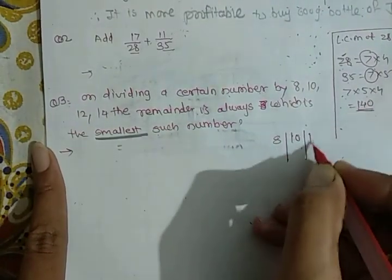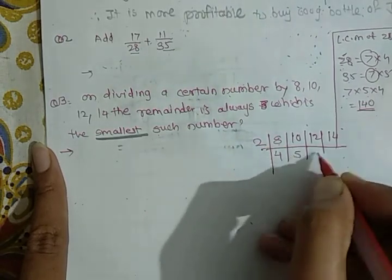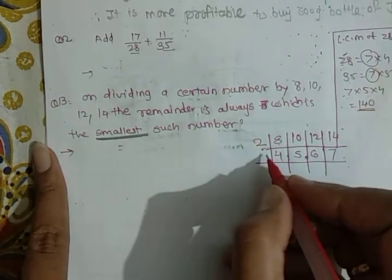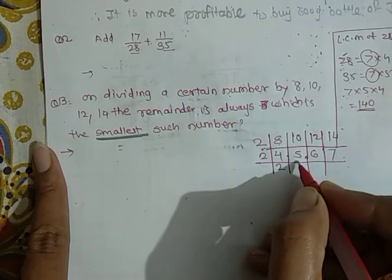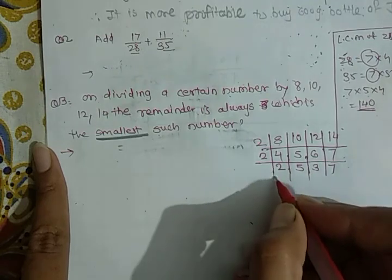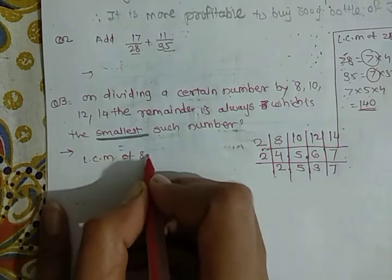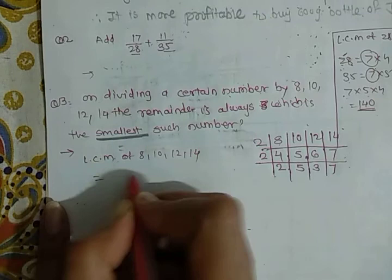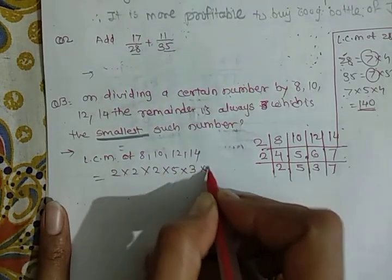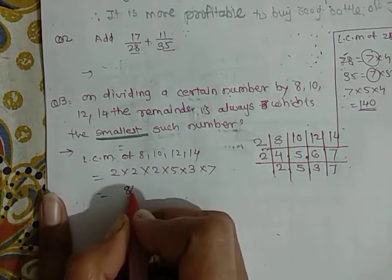8, 10, 12, and 14. First divide by 2: 4, 5, 6, 7. After that again divide by 2: 2, 5, 3, 7. So the LCM of 8, 10, 12, and 14 is equal to 2 multiply by 2 multiply by 2 multiply by 5 multiply by 3 multiply by 7. The LCM of this is 840.